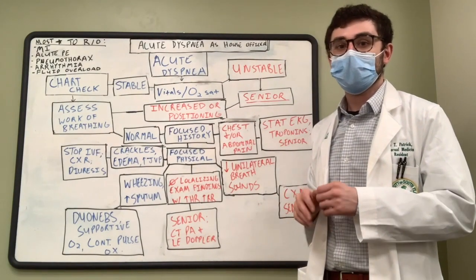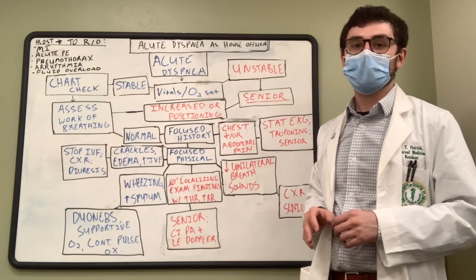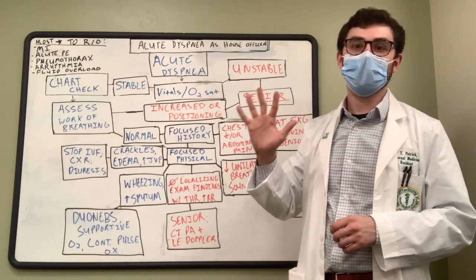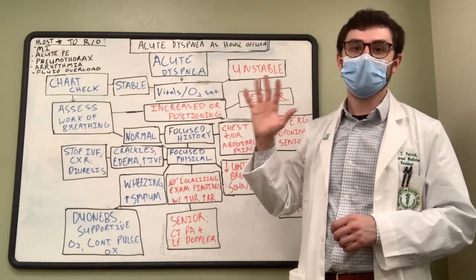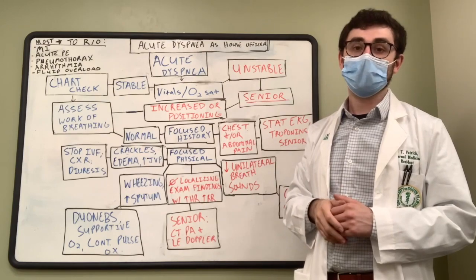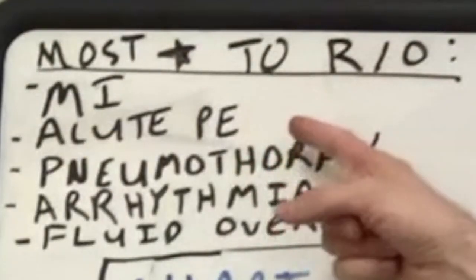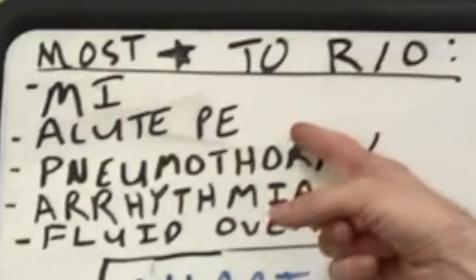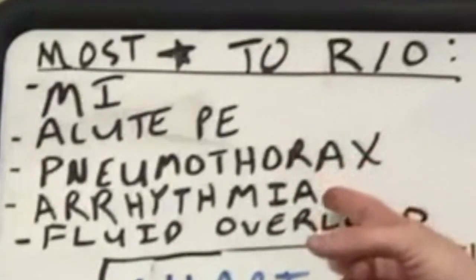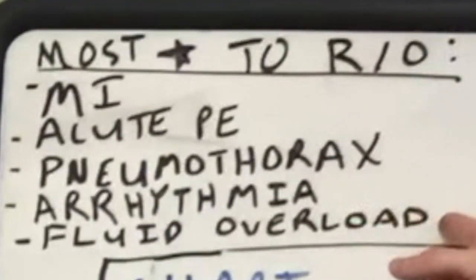While there are many and varied causes of dyspnea, today we've reviewed five of the most important diagnoses to rule out as a house officer: MI, acute pulmonary embolism, pneumothorax, arrhythmia, and fluid overload. That concludes my talk on the approach to dyspnea for a house officer intern. I hope you learned something — take care.